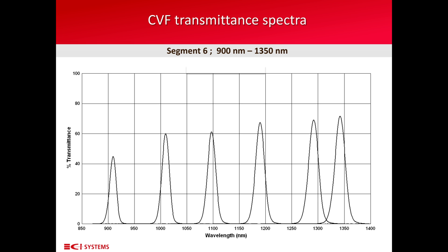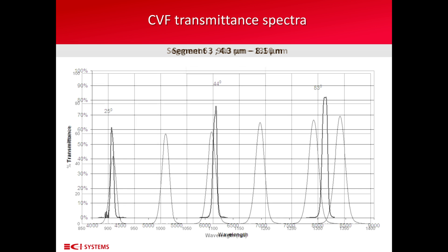This example is a circular variable filter between 900 and 1350 nanometers. The next slide shows a similar circular variable filter designed for the 4.3 to 8.1 micron range. We can see here three peaks at 25 degrees, 44 degrees and 83 degrees.